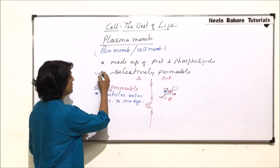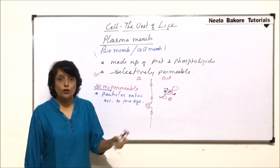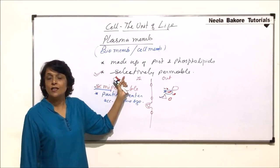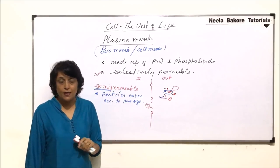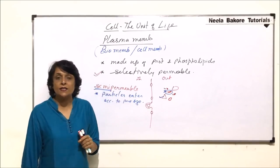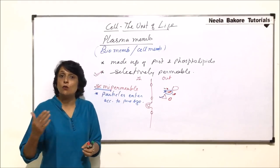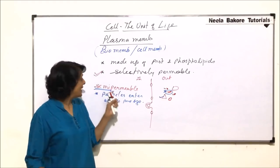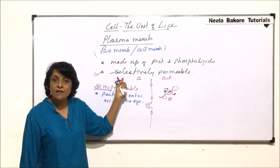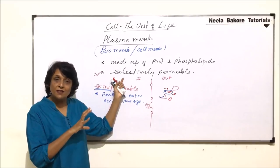If you read different types of books on plasma membrane, both the terms are used — selectively permeable as well as semi-permeable. The point here is it is a selectively permeable membrane as long as it is a part of the cell. Once you take it out of the cell — that means out of the living system — it is going to act as a semi-permeable membrane.